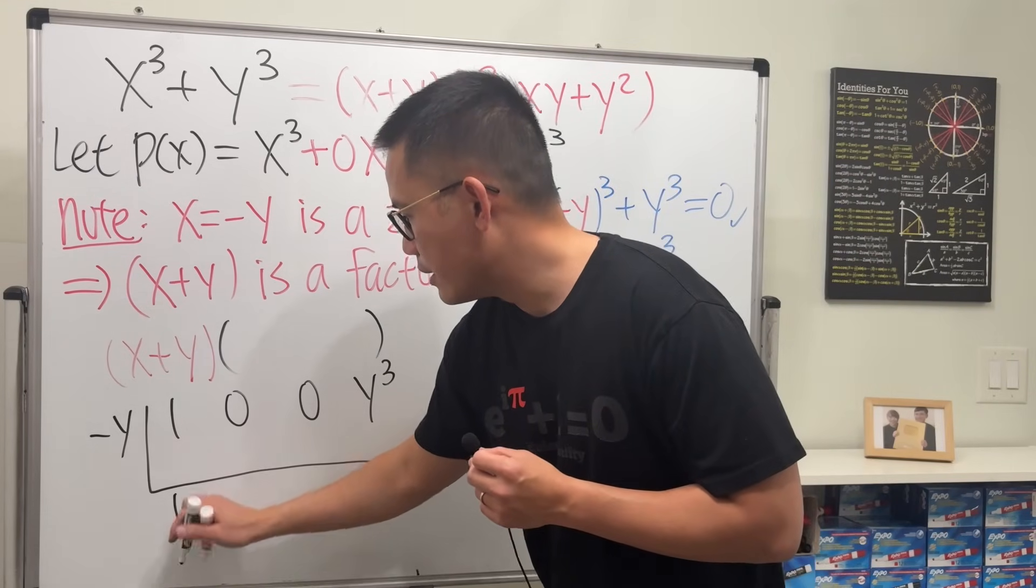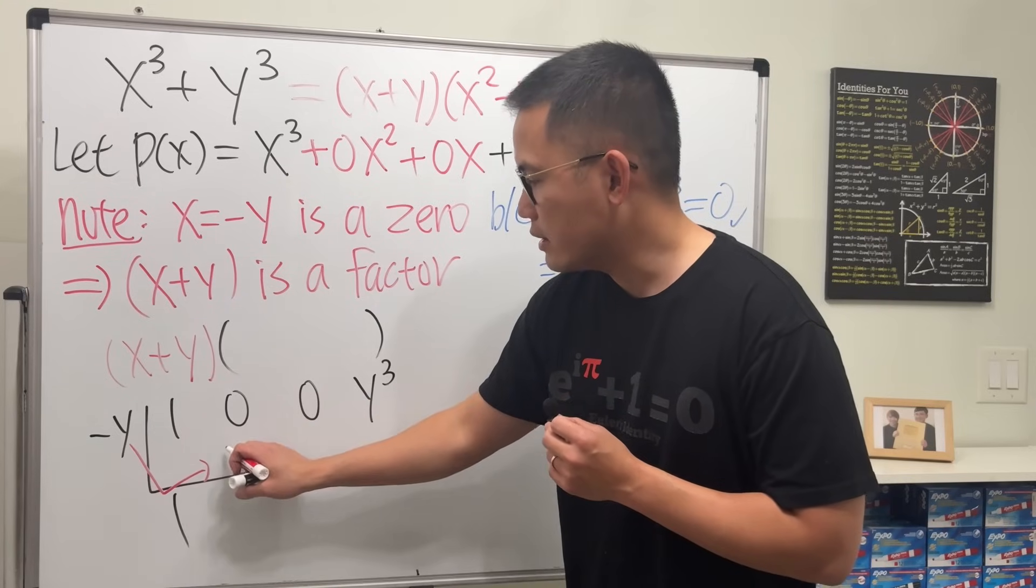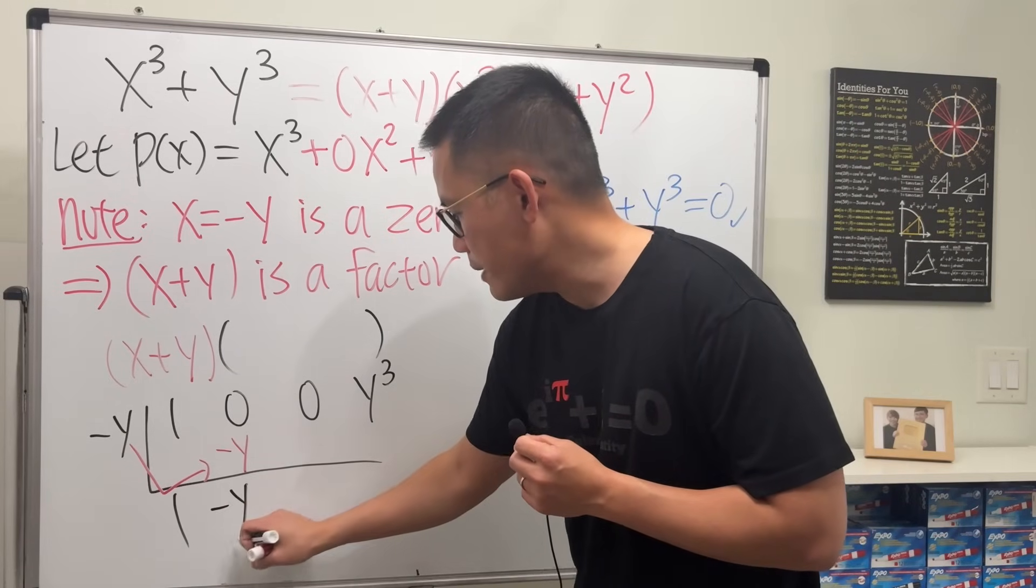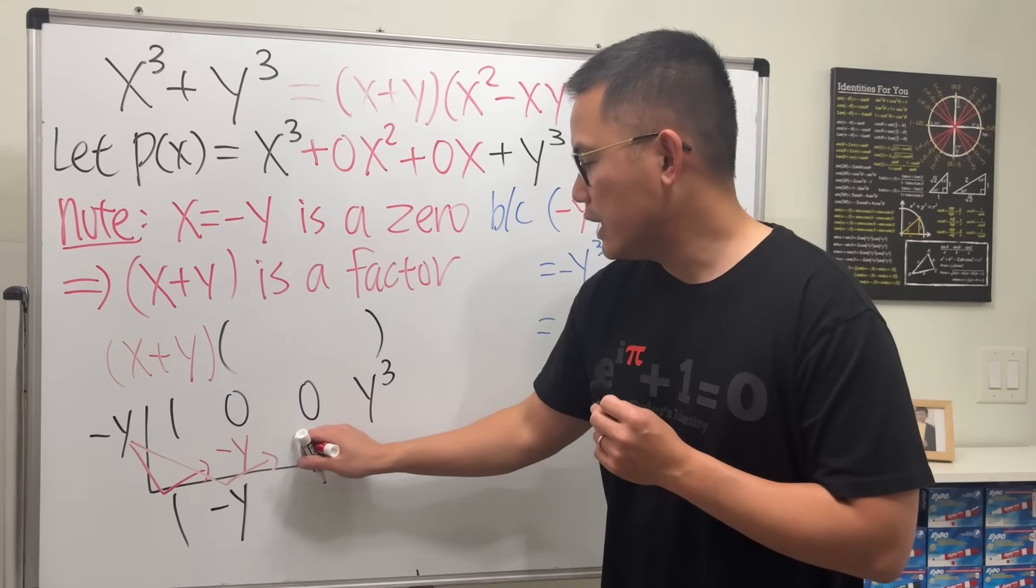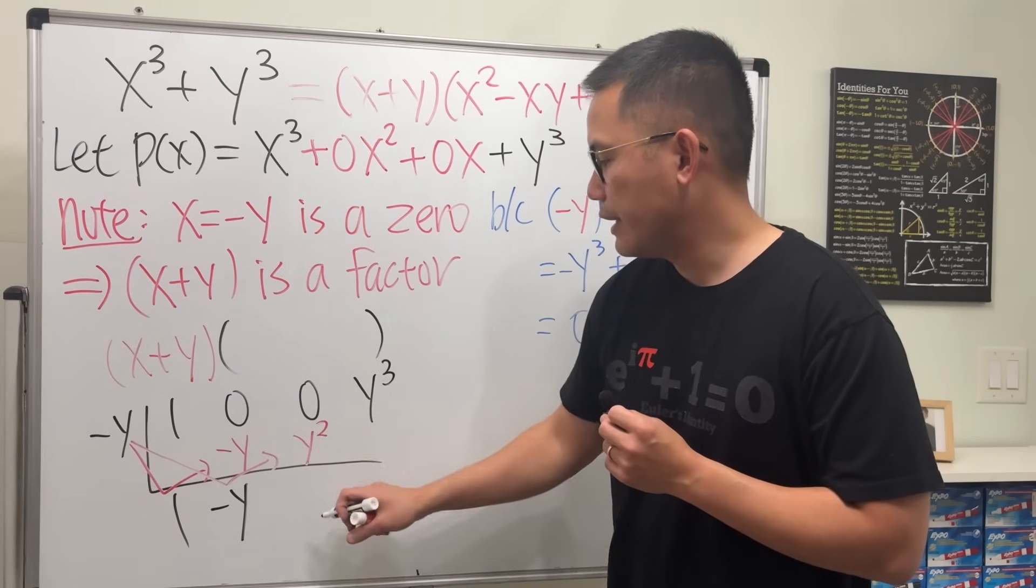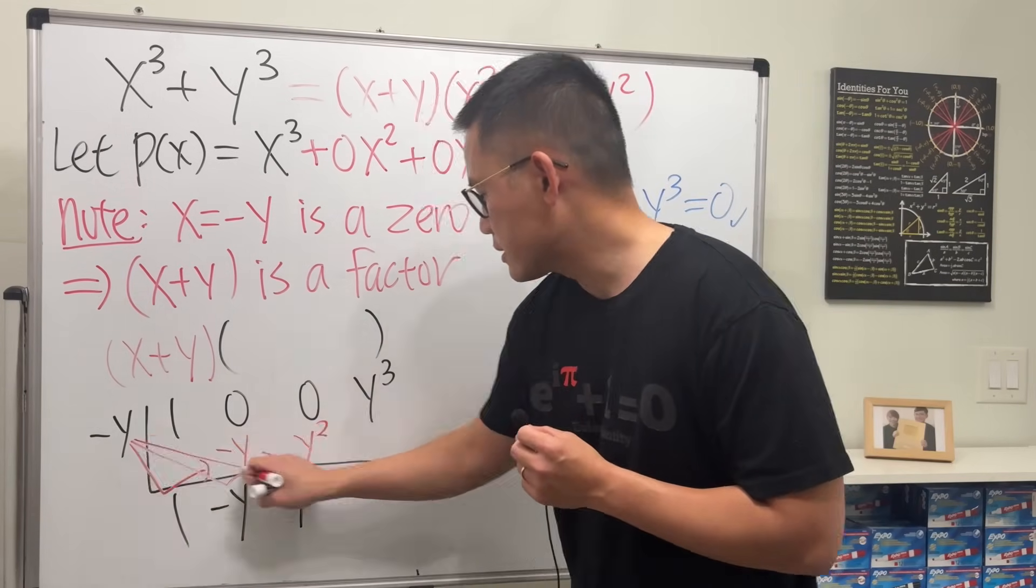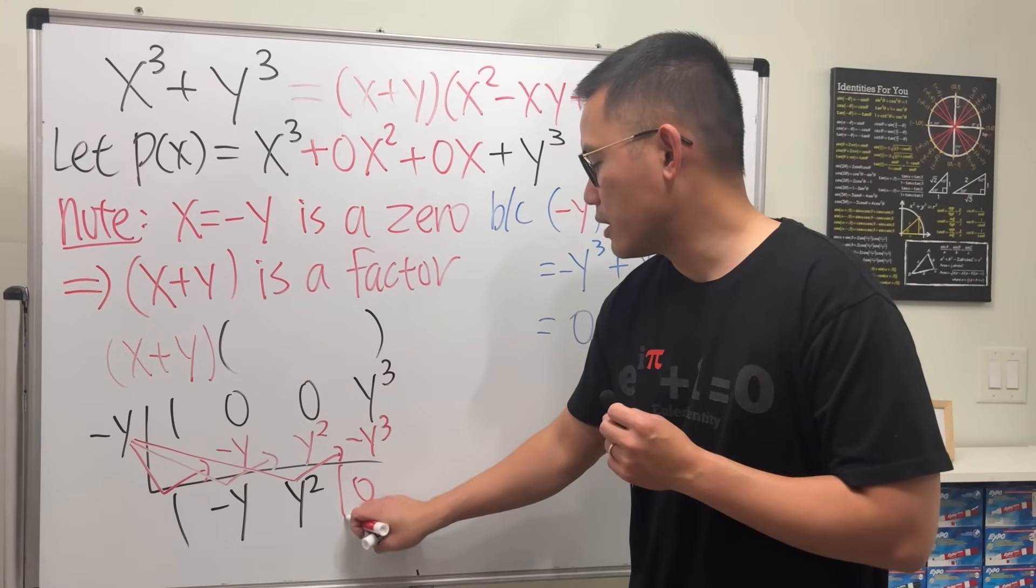Bring down the 1, and then take this times that, negative y times 1 is negative y, and for synthetic division, you are going to add, which we'll get negative y. Continue. Negative y times negative y gives us positive y squared. Add them up. Like that. Finally, take this times that, we get negative y cubed, and the remainder is 0.